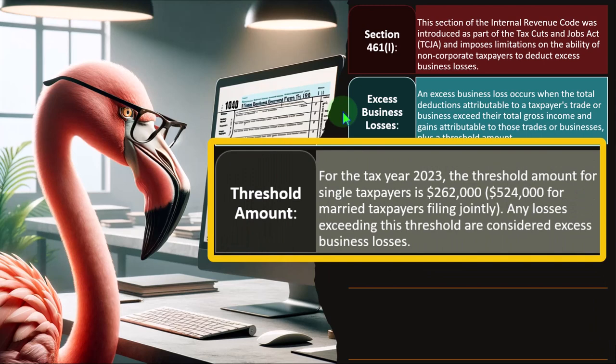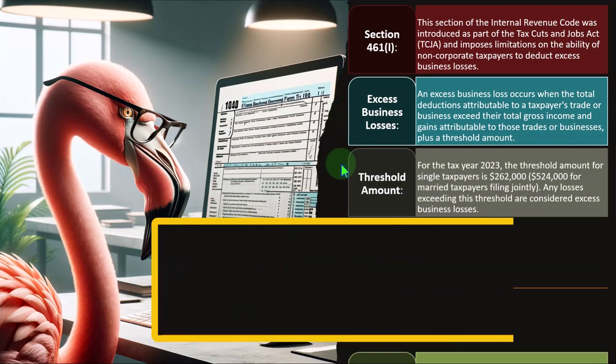For tax year 2023, the threshold amount for single taxpayers is $262,000, and for married taxpayers filing jointly it's $525,000. Any losses exceeding this threshold are considered excess business losses. The general idea is that if there's a loss, you might be able to take it against future income or against other current income, such as W-2 income. But if the loss is quite large, the IRS becomes increasingly skeptical about the deductibility.